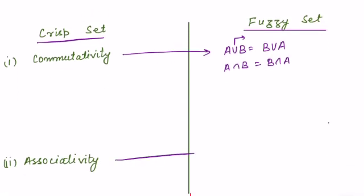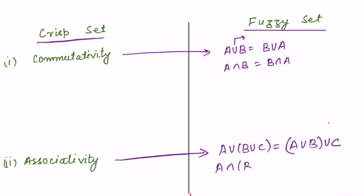Property number 2 is associativity. In order to understand union and intersection, students, you should see the videos on t-norm and t-conorm. Just like crisp sets, fuzzy sets follow this property of associativity — that is, A union (B union C) is equal to (A union B) union C, and similarly for intersection also.